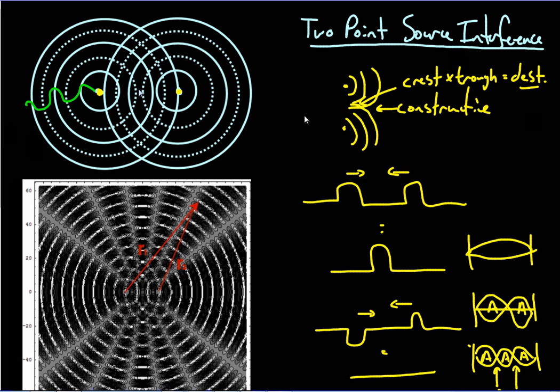So if we look, there are certain points along here where crests are meeting crests, crest to crest. Then right next to it, there's points where a crest is meeting a trough. If you look at this picture, this is more of an actual picture. I think it's computer generated, but it gives you a better idea of what this looks like in actual practice, and you can see that there are areas where there's no wave activity and areas where there is wave activity.